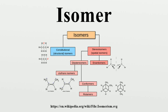A simple example of isomerism is given by propanol. It has the formula C3H8O and occurs as two isomers: propan-1-ol and propan-2-ol. Note that the position of the oxygen atom differs between the two — it is attached to an end carbon in the first isomer and to the center carbon in the second.